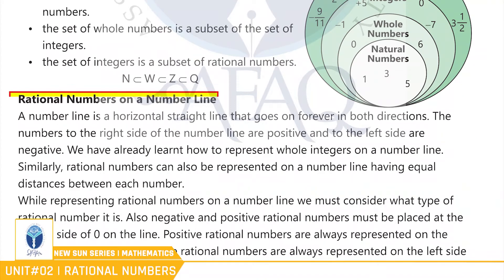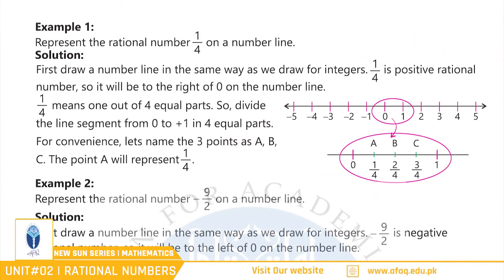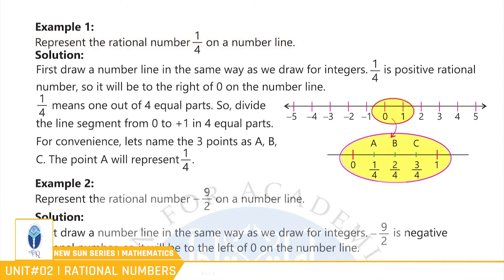Rational numbers on a number line. ہم نے integers، whole numbers اور natural numbers کو number line پر represent کیا تھا. اب ہم rational numbers کو number line پر represent کریں گے. مثال کے طور پر، represent the rational number one by four on a number line. Good. One by four، zero اور one کے درمیان میں آئے گا.